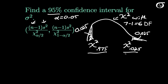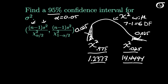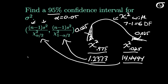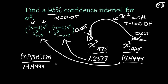I can find these chi-square values from a table or computer. They are 14.4494 and 1.2373 to four decimal places. If you don't know how to find these values, I have a separate video for that. Now we simply substitute these into our formula. n minus 1 is 7 minus 1; we multiply that by our variance 315.5714 and divide by the chi-square value 14.4494 for the lower bound. The upper bound is 7 minus 1 times 315.5714 divided by 1.2373.